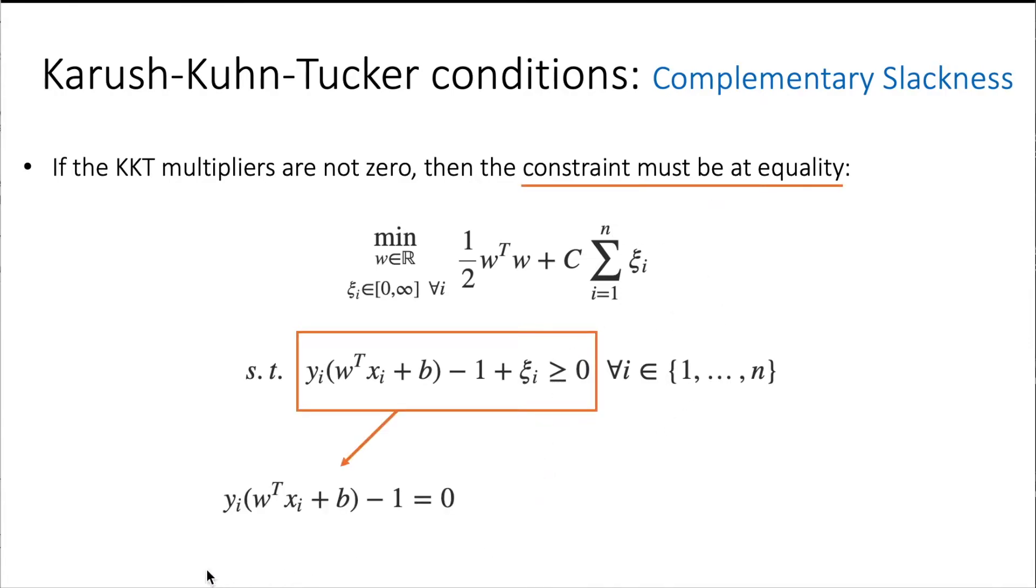This means that we have this equation, ensuring that this constraint in particular is going to be at equality. This means that b is equal to this term here, just by clearing up from this equation.